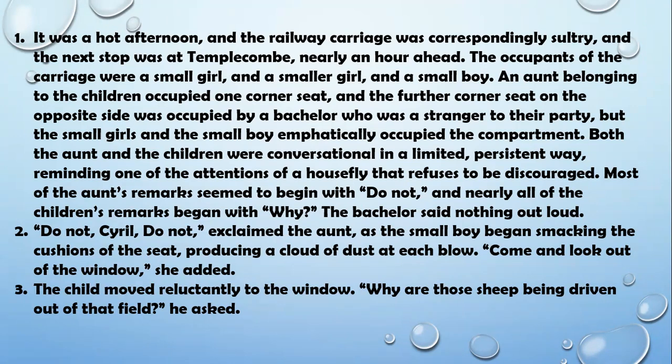Most of the aunt's remarks seemed to begin with 'Don't,' and nearly all of the children's remarks began with 'Why?' The bachelor said nothing out loud. The aunt was repeatedly reminding the children: 'Don't climb there, don't shout, don't make noise.' In return the children responded: 'Why should we not make noise? Why should we not go there?' The bachelor and other passengers sat silently, feeling irritated.